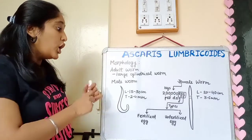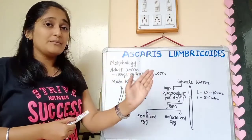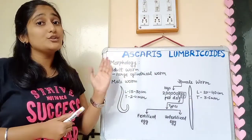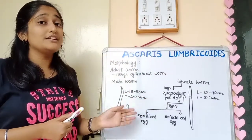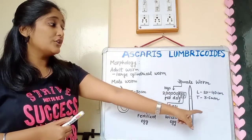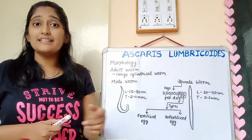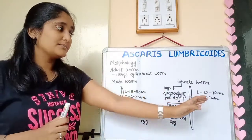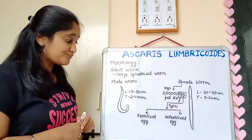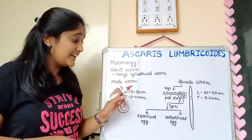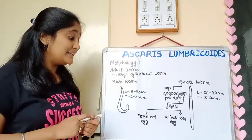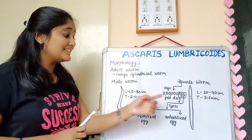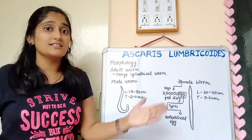Male worm length is 15 to 30 cm, and female worm length is 20 to 40 cm, making it a very large worm — you can imagine it. Male thickness is 2 to 4 mm and female thickness is 3 to 6 mm. This large size is why it is called the largest nematode.